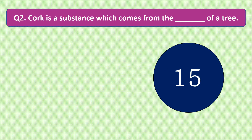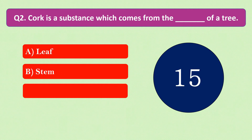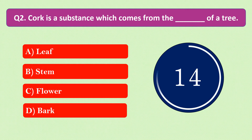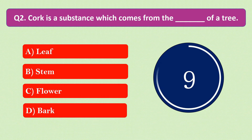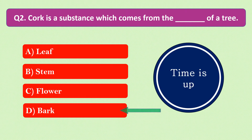Question number 2: Cork is a substance which comes from the dash of a tree. The options are A. Leaf, B. Stem, C. Flower, or D. Bark. Your time starts now. Your time is up and the right answer is option D: Bark. Cork is a substance which comes from the bark of a tree.